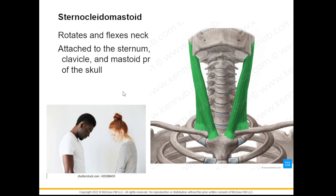Next we have the sternocleidomastoid. This muscle is named according to its origin and insertion. The origin is the sternum, and it inserts into the mastoid process of the skull. It also has an attachment at the clavicle — so sternum, clavicle, and the mastoid process. It allows us to rotate and flex the neck, such as when you're looking down.